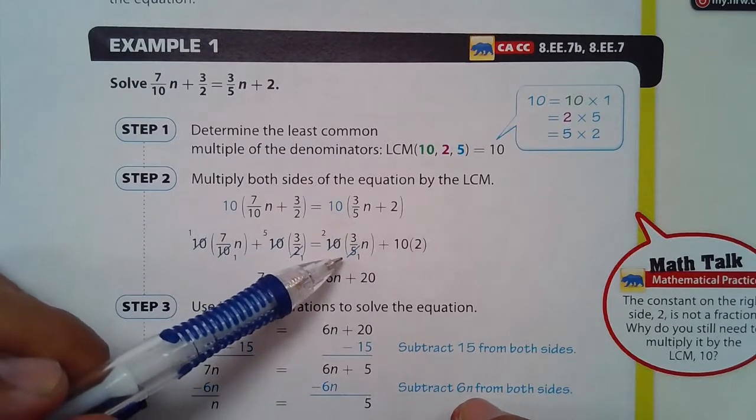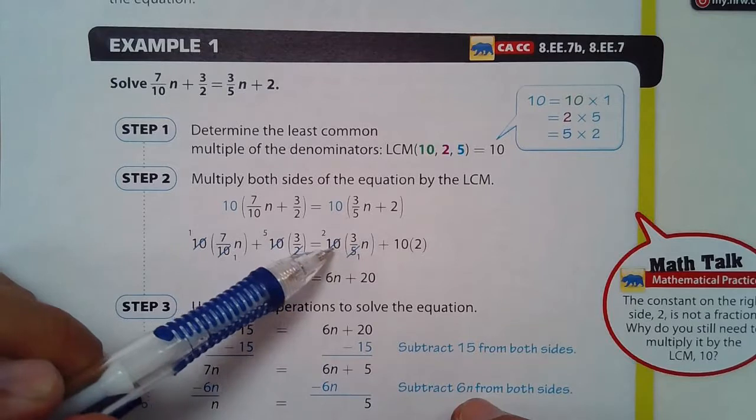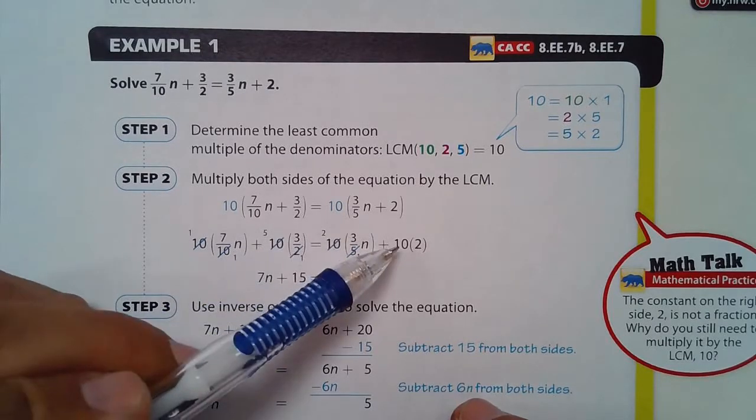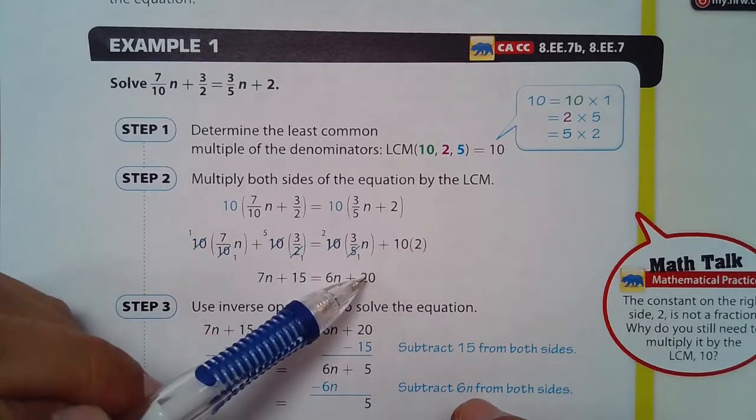Also 5 divides both of these, so 5 divides 5 one time and 5 divides 10 two times. 2 times 3 is 6 and 10 times 2 is 20.